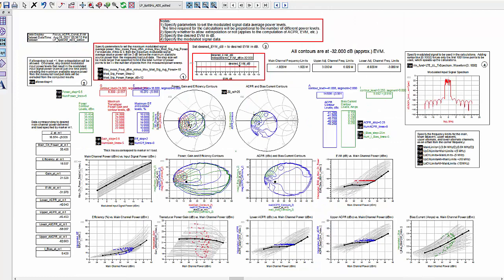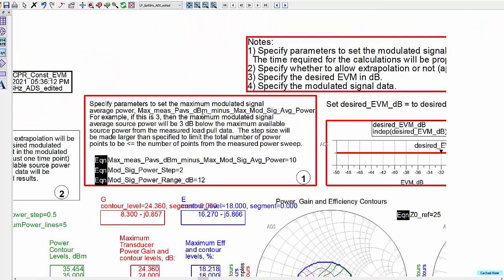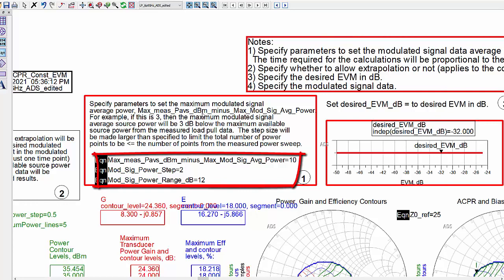These equations set the modulated input signal's power levels. In this case, we want the maximum average modulated input signal power level to be 10 dB below the maximum one-tone input signal power level of the measured load pool data. Setting this number lower would result in a higher average modulated input signal power level and increased likelihood of extrapolation during the calculations.